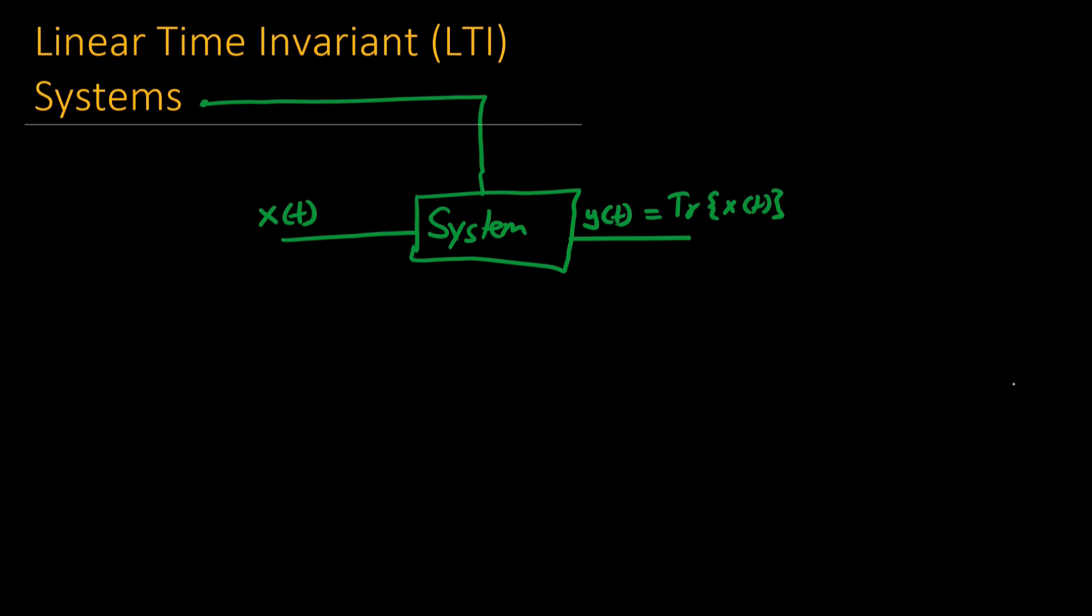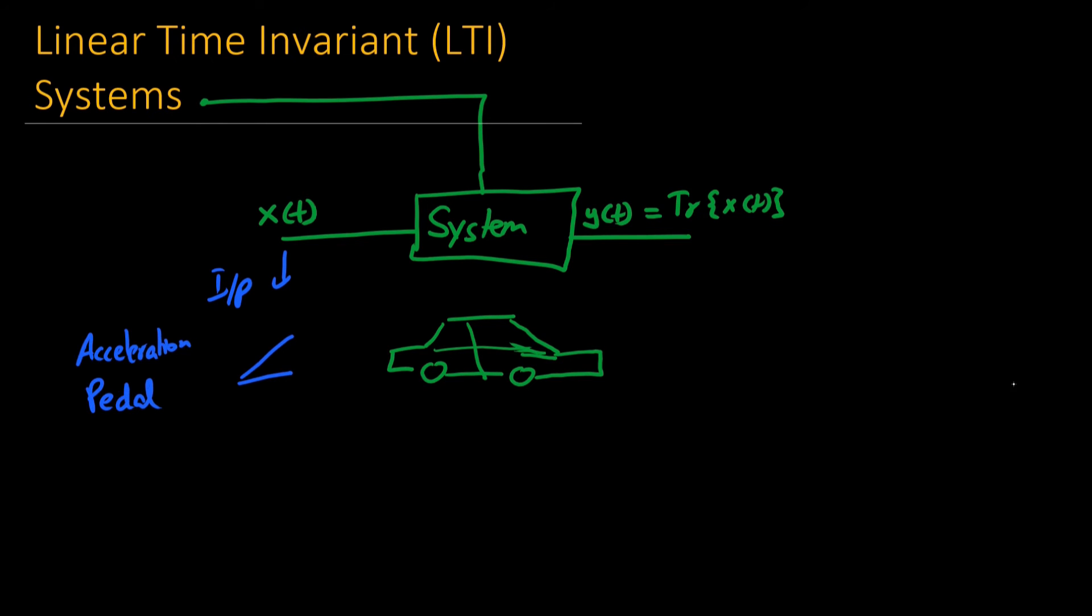Let's say that the system is a vehicle and the input to this vehicle is an acceleration pedal. We apply a force on that acceleration pedal and the system, which is this vehicle, transforms this input x(t), which is the pedal, in terms of rotation of the wheels. So depending on the force applied on the acceleration pedal, we would have an appropriate speed of the vehicle.